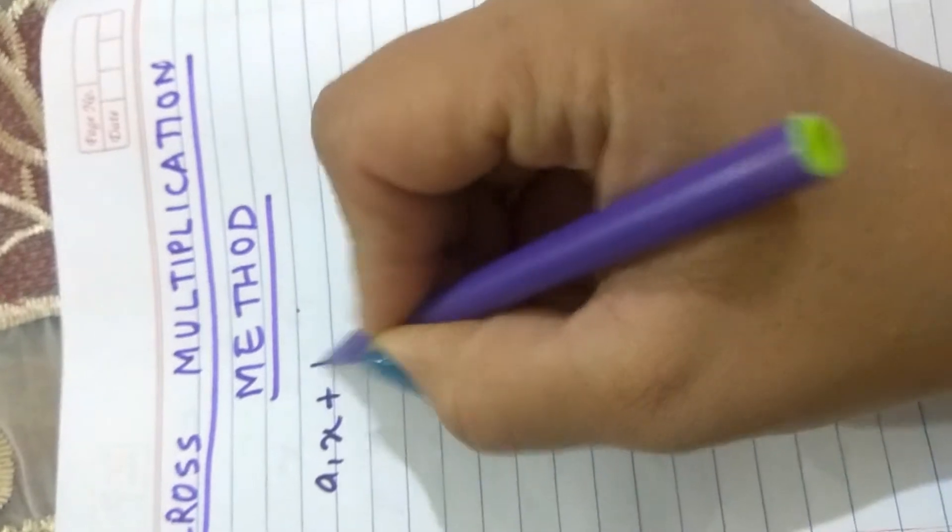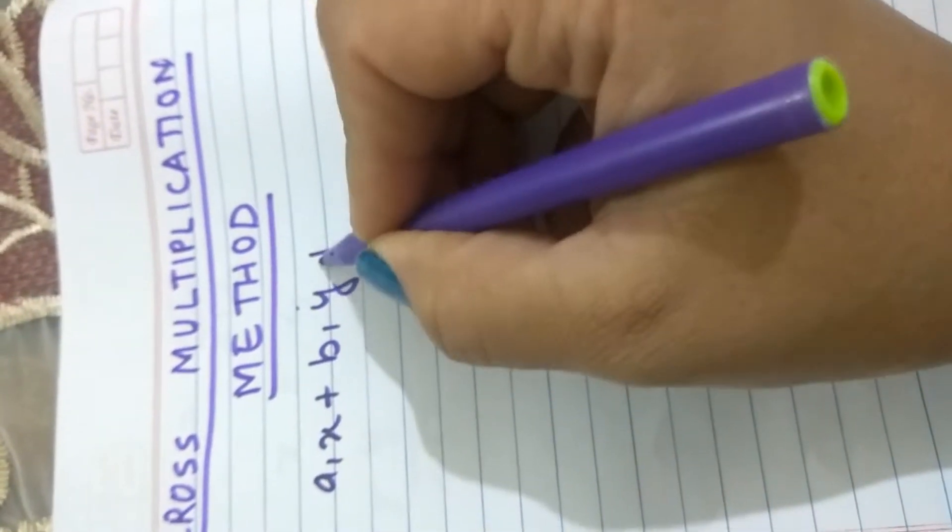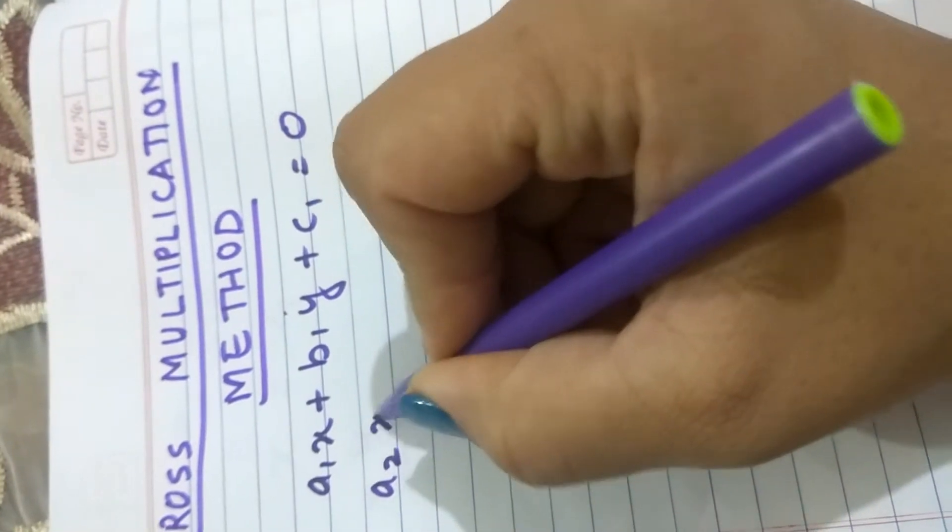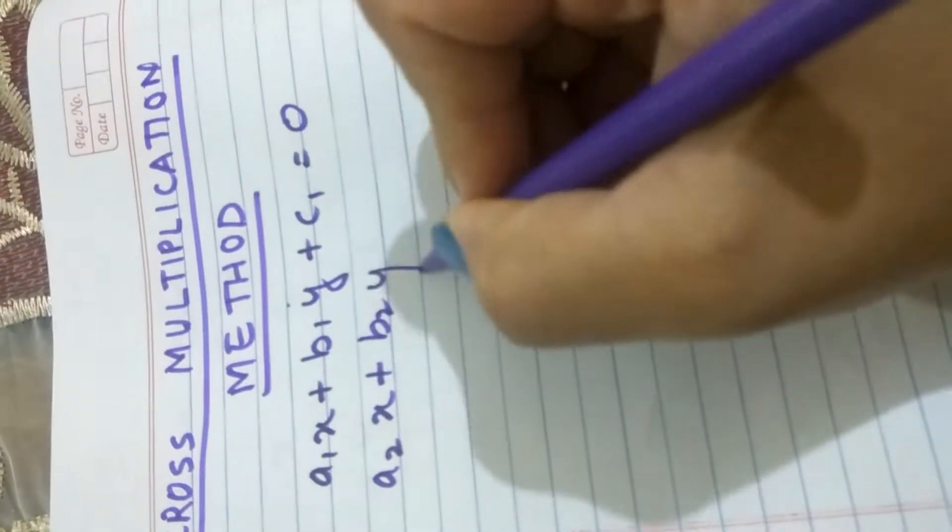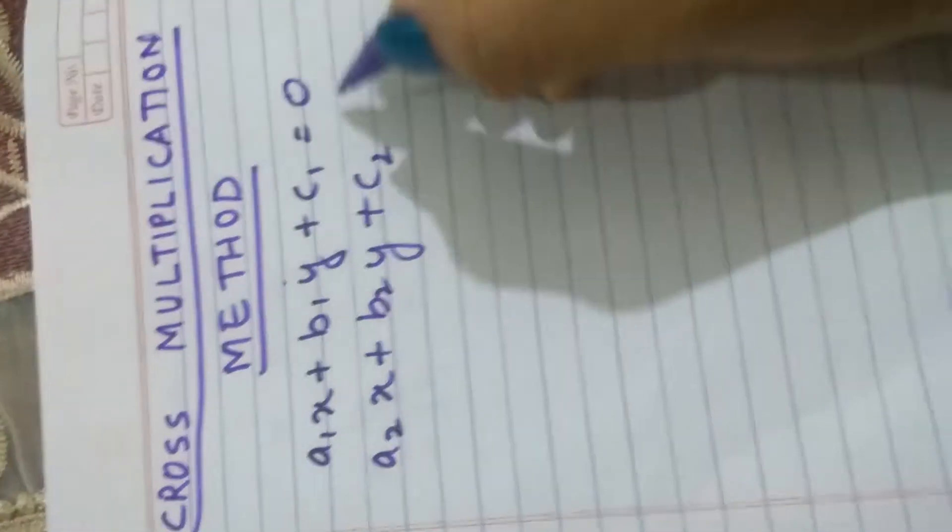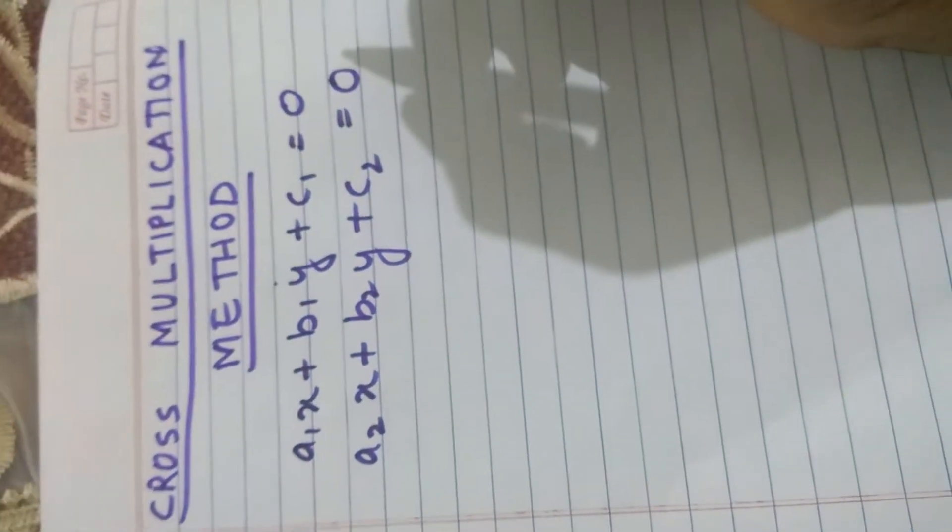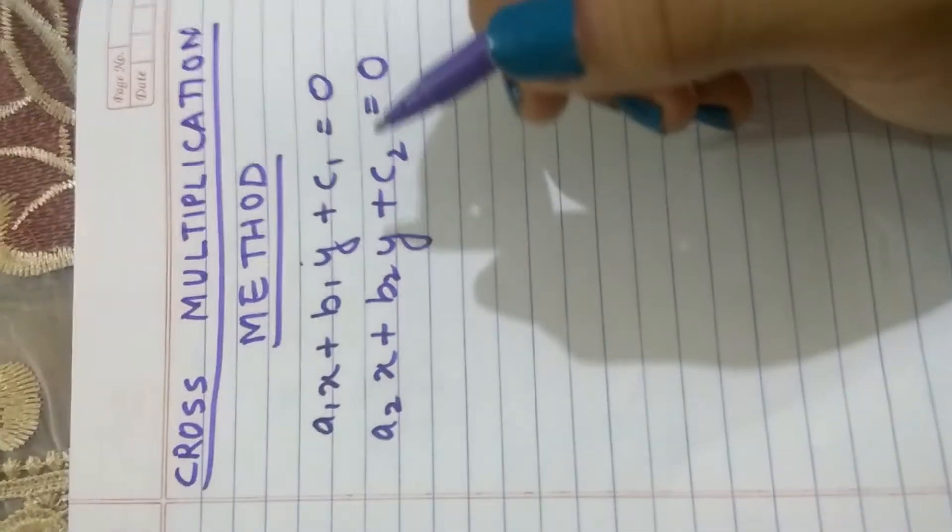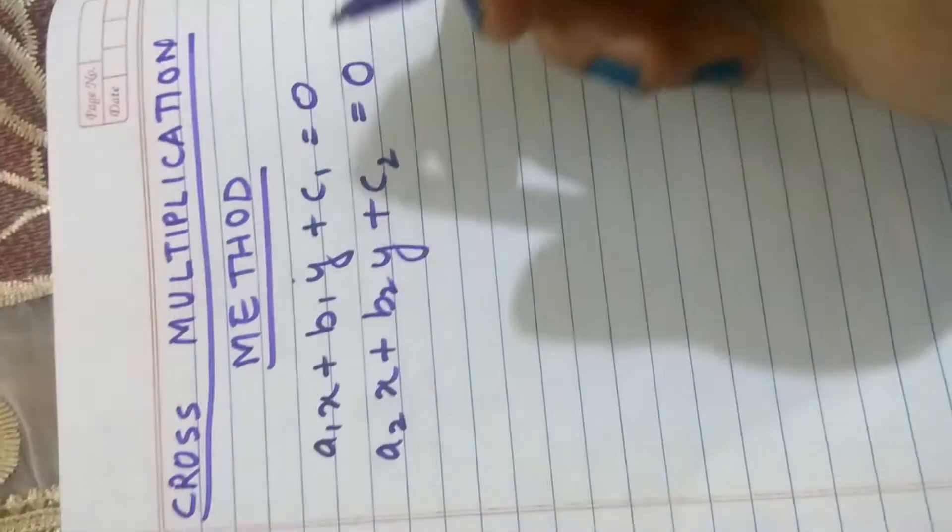Let us first take the standard form of linear equations in two variables. In standard form, linear equations will be written like this, where c1 and c2 are constants, x and y are the variables, and a1, a2, b1, b2 are also constants and coefficients of x and y.